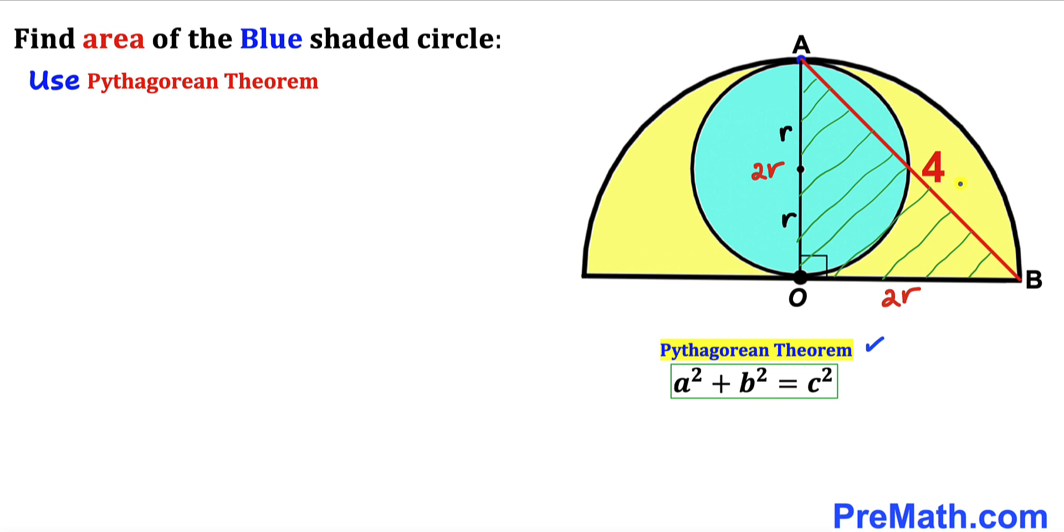Let me go ahead and call this longest leg our side c. I'm going to call this side a and this side our b. So let's go ahead and fill in the blanks in this Pythagorean formula.